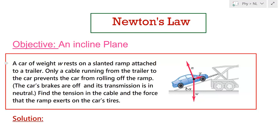Hello friends. In the last video we have seen how to apply Newton's first law in case of two-dimensional equilibrium, applied for a Cartesian coordinate — horizontal and vertical. We wrote two equations, one along the x-axis and another along the y-axis, and solved for unknowns.